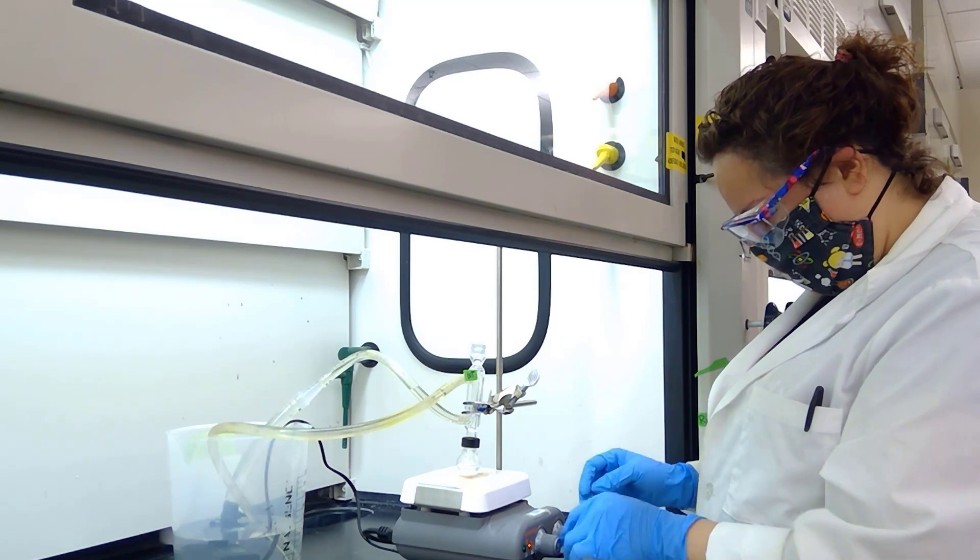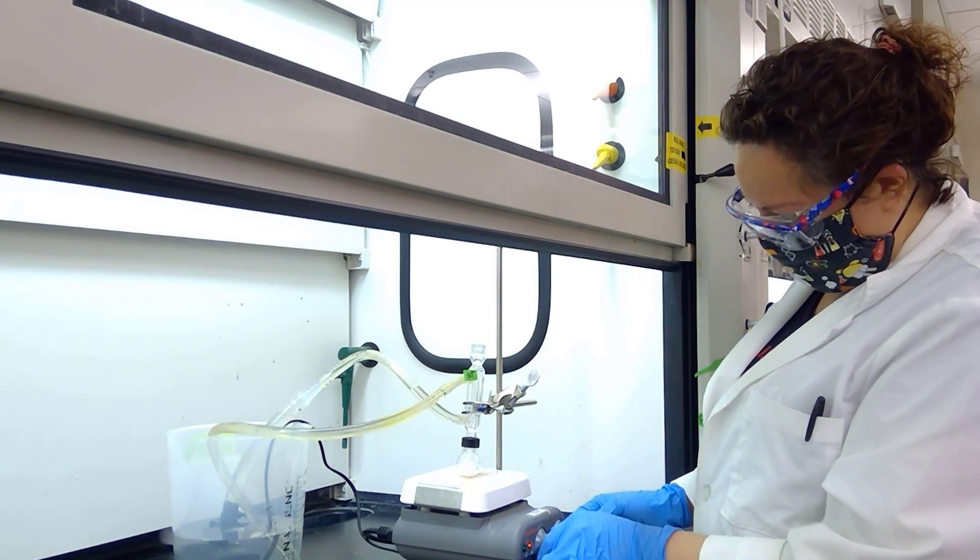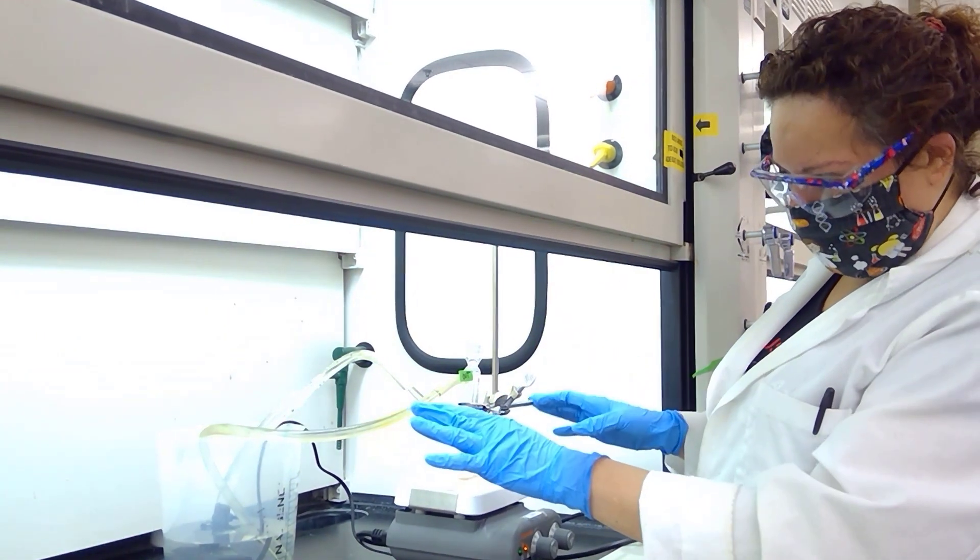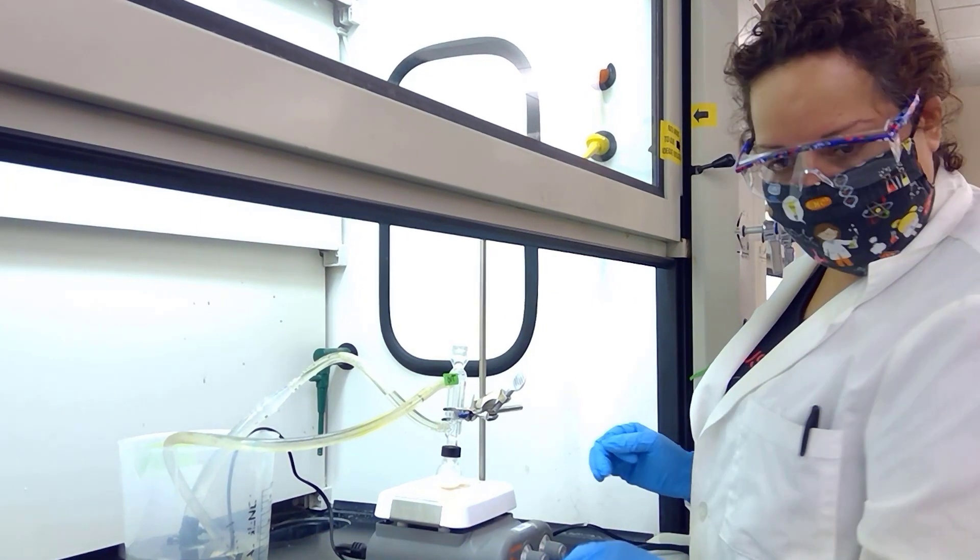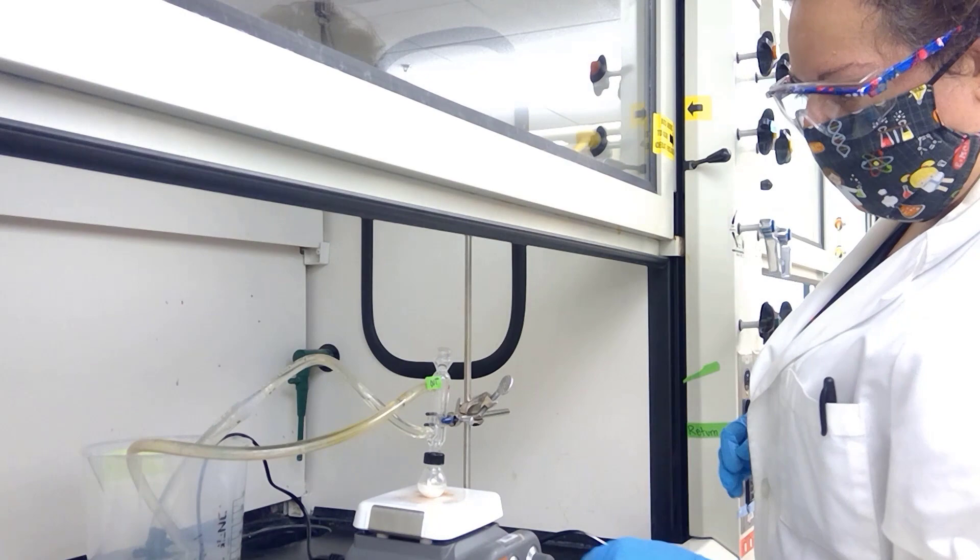We do want the round bottom flask to touch the hot plate here, and we'll adjust the heat slightly so that we can start to get a reflux and some stirring. Also if you notice, my water jacket is set up to a pump system. We will have water come in from the bottom to provide some nice cooling for our reflux, and then it will drain to the top.